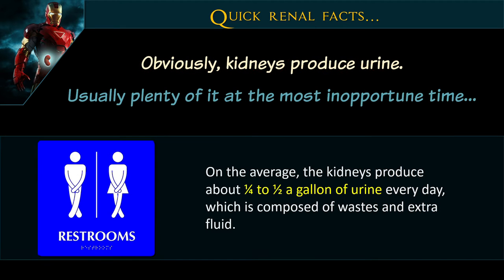Obviously the kidneys make urine — that's captain obvious — and that's kind of their main function. On average, the kidney makes about a quarter to half a gallon of urine every day in a 24-hour period, made up mainly of waste product and extra fluid that your body doesn't need on board.